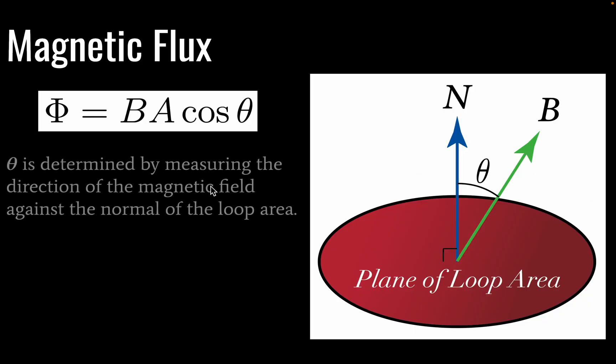So theta is determined by measuring the direction of the magnetic field against the normal of the loop area. So here's our loop. And we have a normal line that is perpendicular to our plane. When we measure this angle, we measure it against the normal. And then that is going to give our flux.